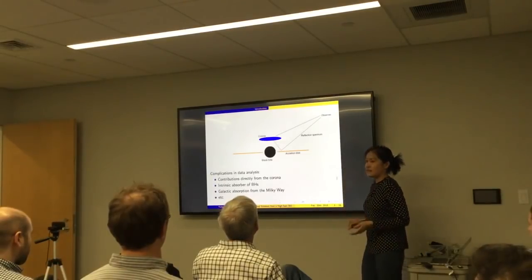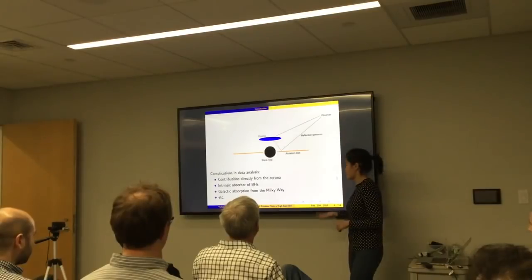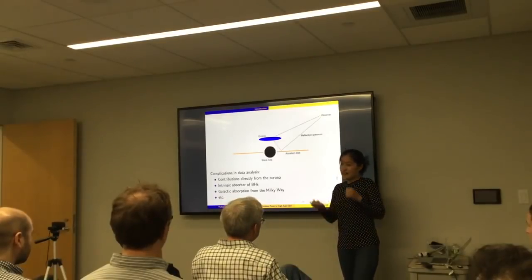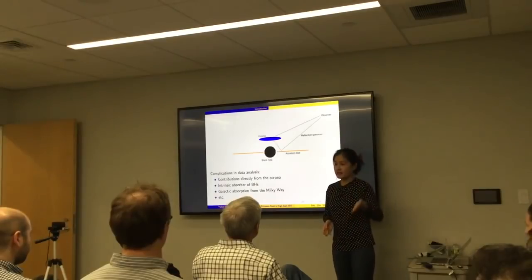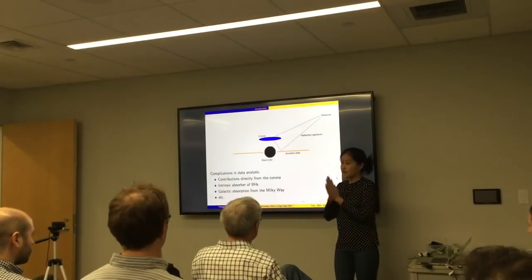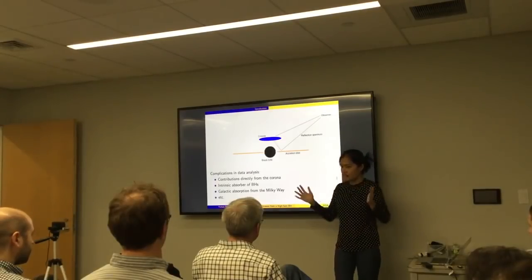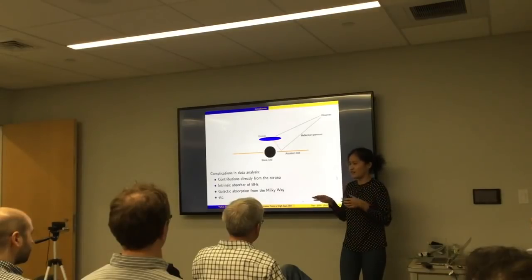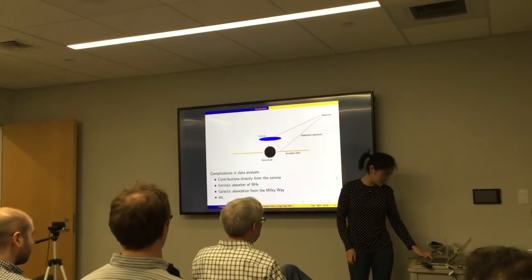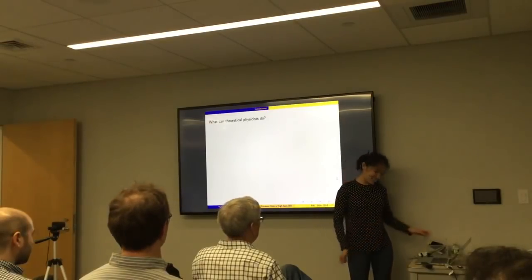By slowly accreting, I mean that we assume the particles on the disk to follow circular orbits. So we ignore the radial component. I don't exactly know what the corona is. If anyone knows, please let me know. But what I learned from astrophysicists is that the corona excites iron atoms on the accretion disk. And in turn, the excited iron atoms emit, and that light can be observed by an observer which is very far from the black hole. So this situation is very complicated. In particular, when doing data analysis, you have to isolate data from contributions directly from the corona, from intrinsic absorber of black holes, galactic absorber from the Milky Way, etc. I'm not an expert on this. But the whole situation is complicated.